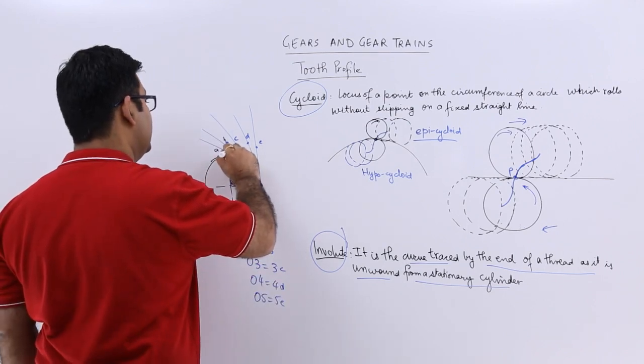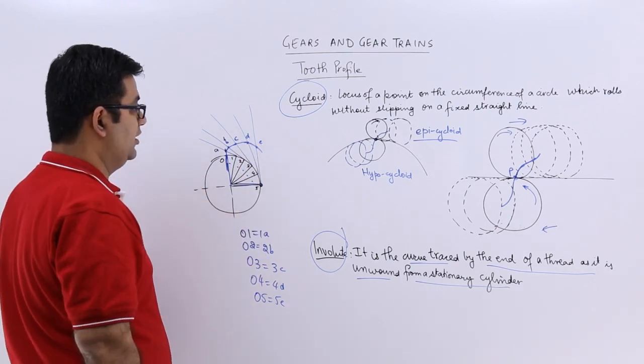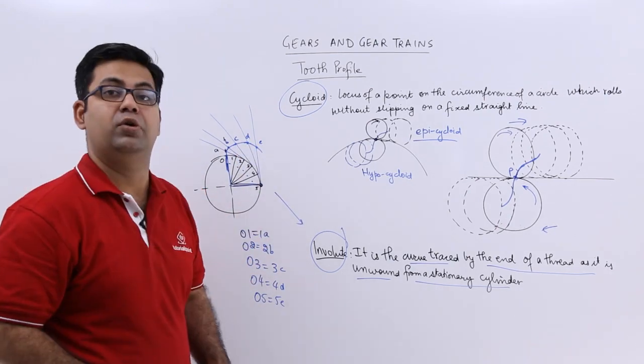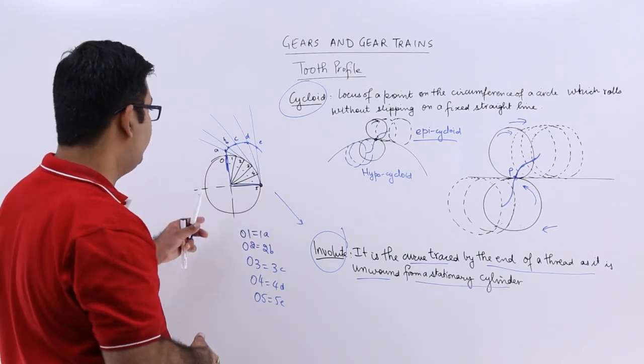So when you join these points, you get a curve which is called an involute curve. This is how an involute curve is generated.